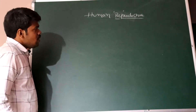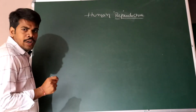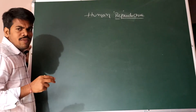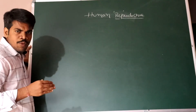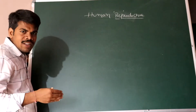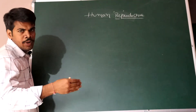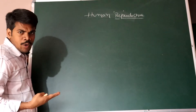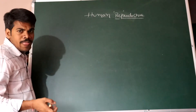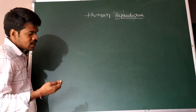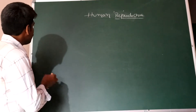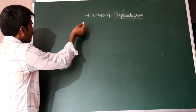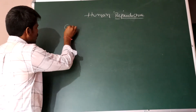In the human reproductive system, there are some events. First we will discuss about the events of the human reproductive system, later we will cover the male reproductive system. The first event is gametogenesis.